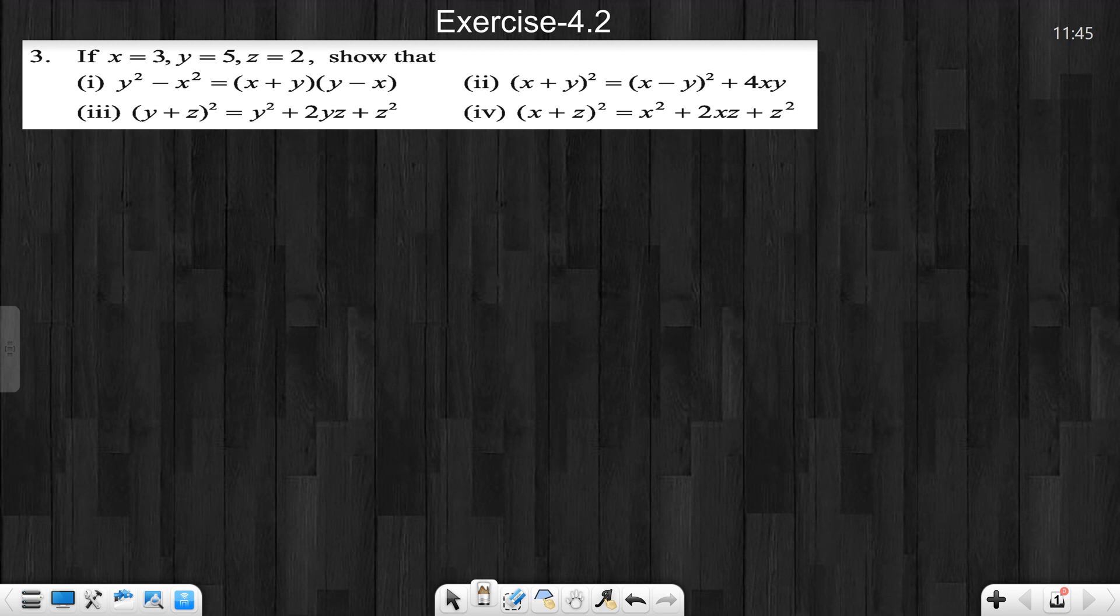Then show that x equals 3, y equals 5, and z equals 2. This is the exact expression that we have to prove. Show that left-hand side and right-hand side are equal. Let's start with number one. This is the first number math.